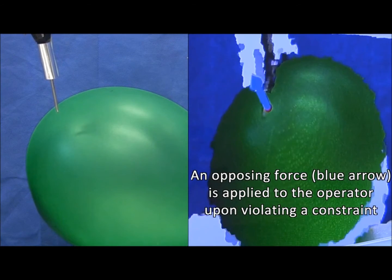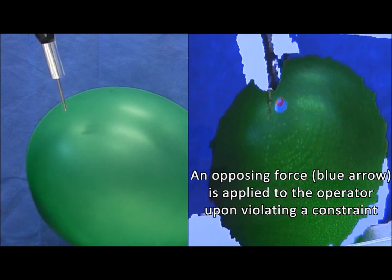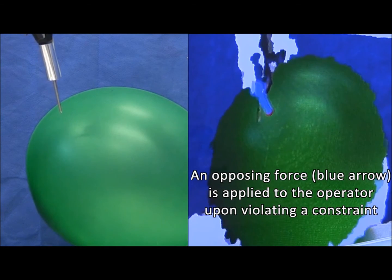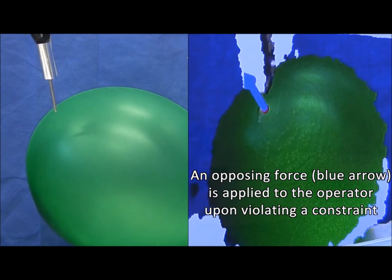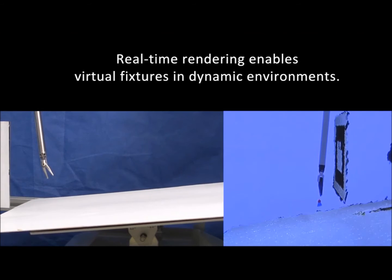The balloon is protected by a virtual fixture as the operator attempts to puncture it. In the point cloud image, the magnitude of the blue arrow represents the force applied to the operator.